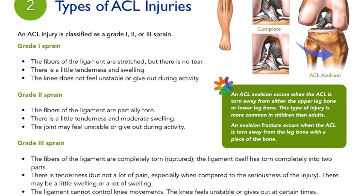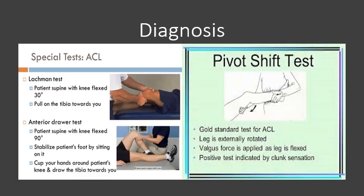Grade three means complete tearing of the ligament. There is tenderness but not a lot of pain, because even the pain receptors got torn. The ligament cannot control knee movements, and the knee feels unstable or gives out at certain movements. These are the three types of ACL injuries.